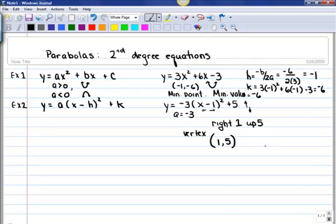The negative indicates that our parabola opens downward, so the point that we have here is actually a maximum point. Our maximum value is just our k value, so our maximum value is 5.